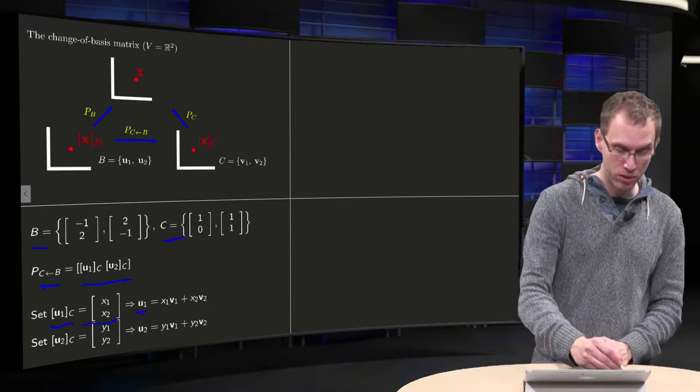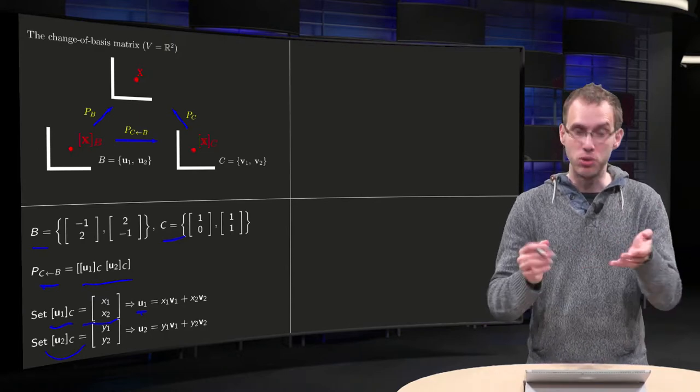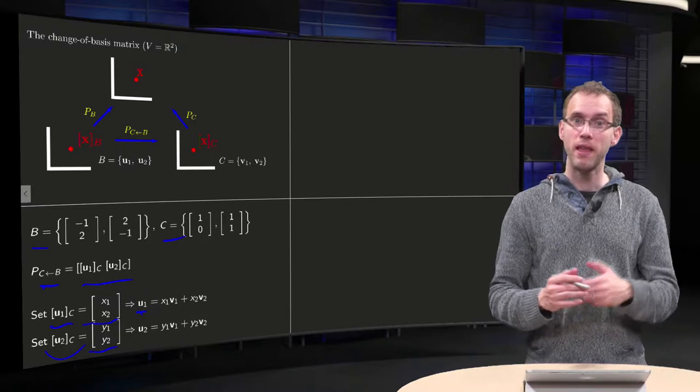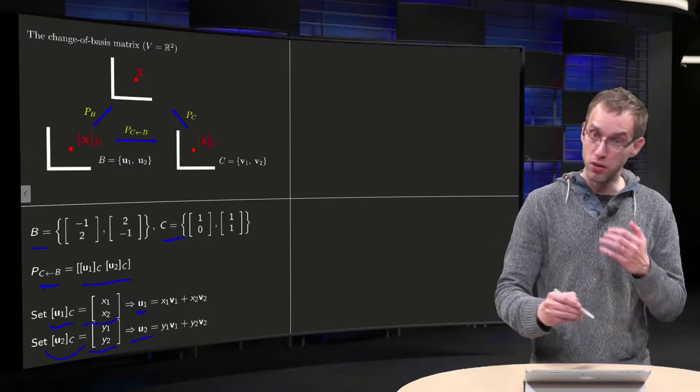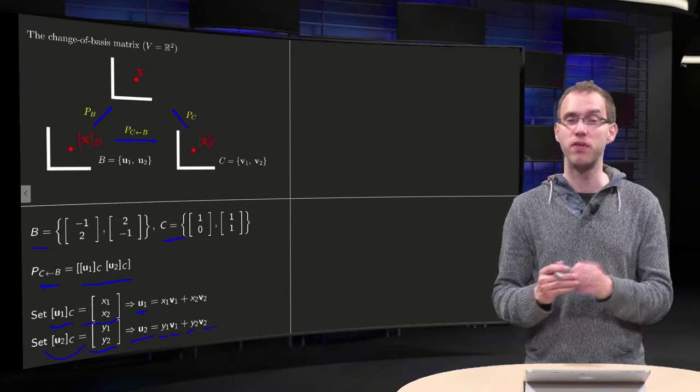And similarly, for u2 in c, it will be a vector in R2, so use two different names for the weights. Use as weights y1 and y2. Then you know u2, known vector, equals y1 times v1, known vector, plus y2 times v2, known vector.